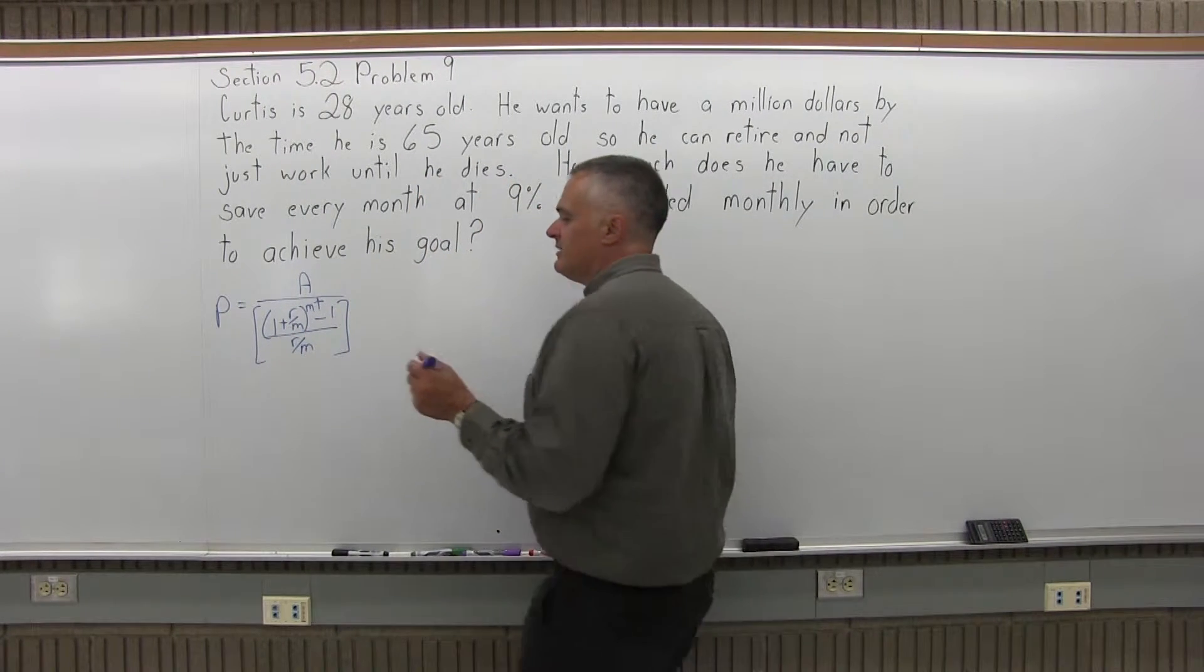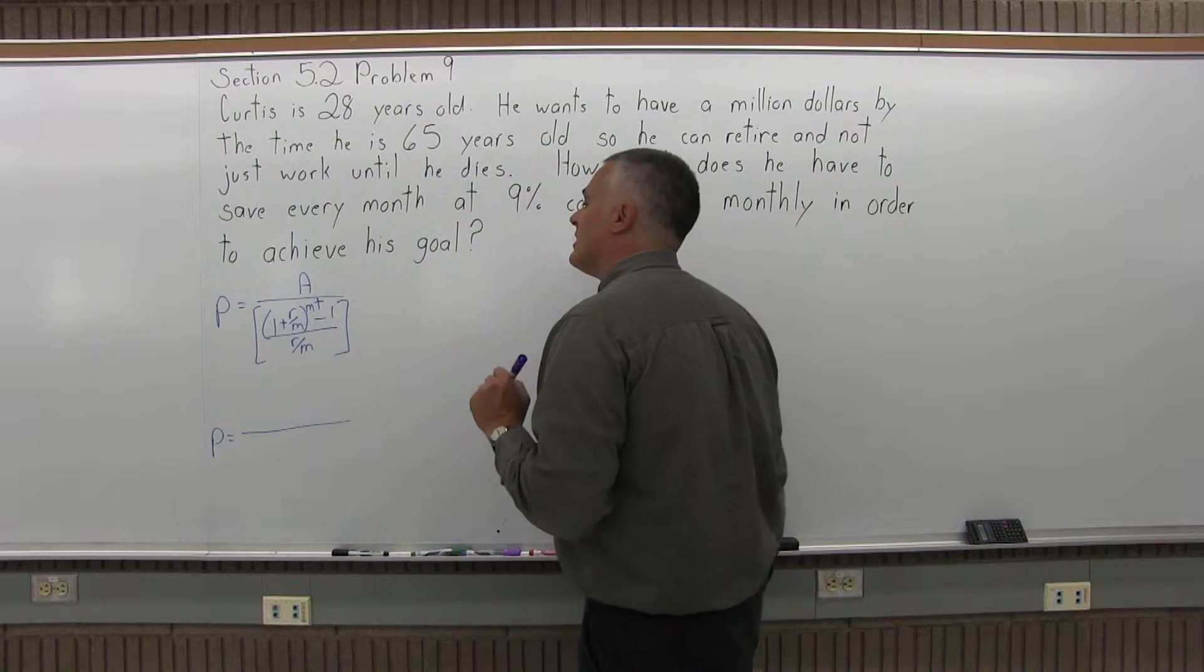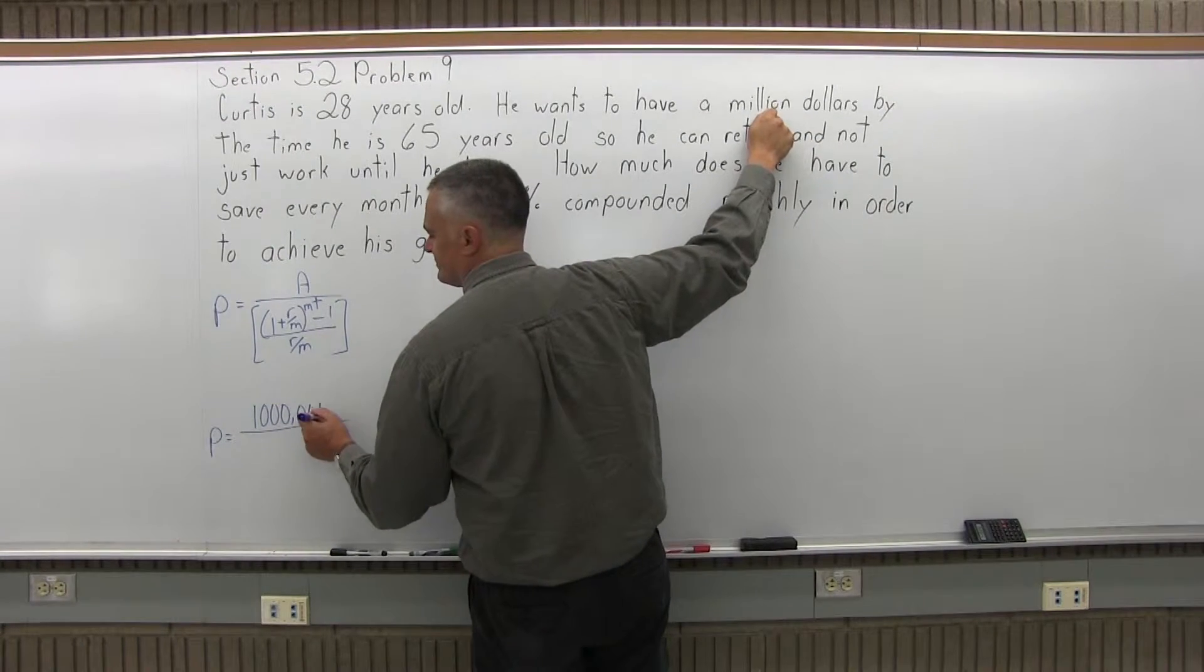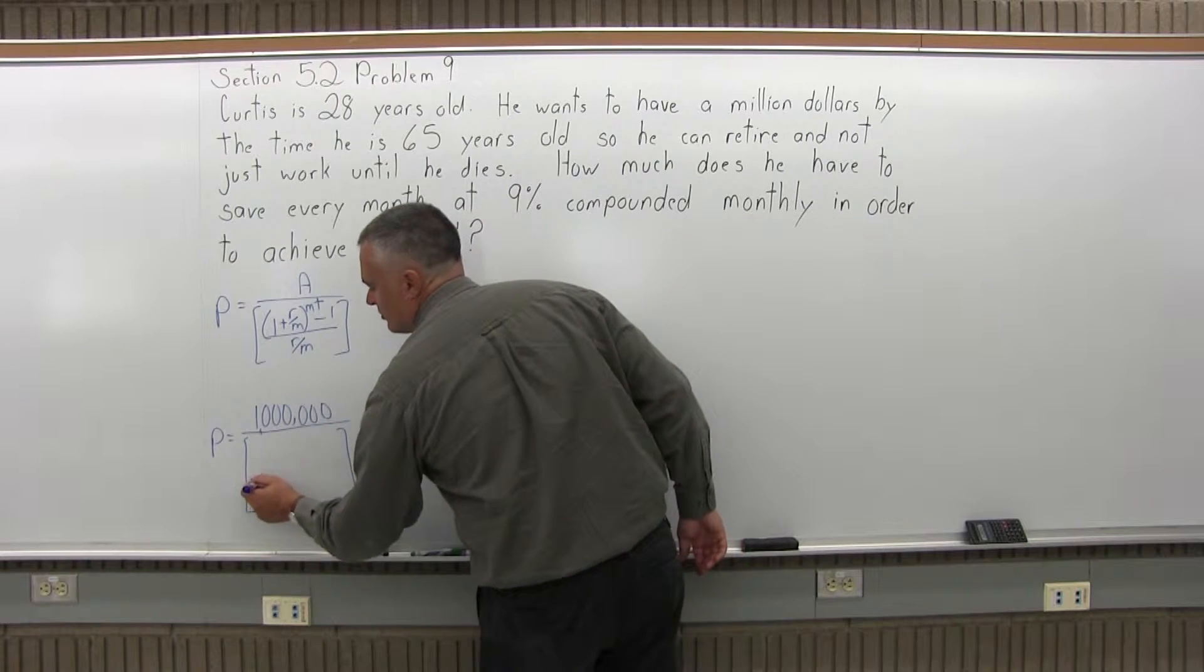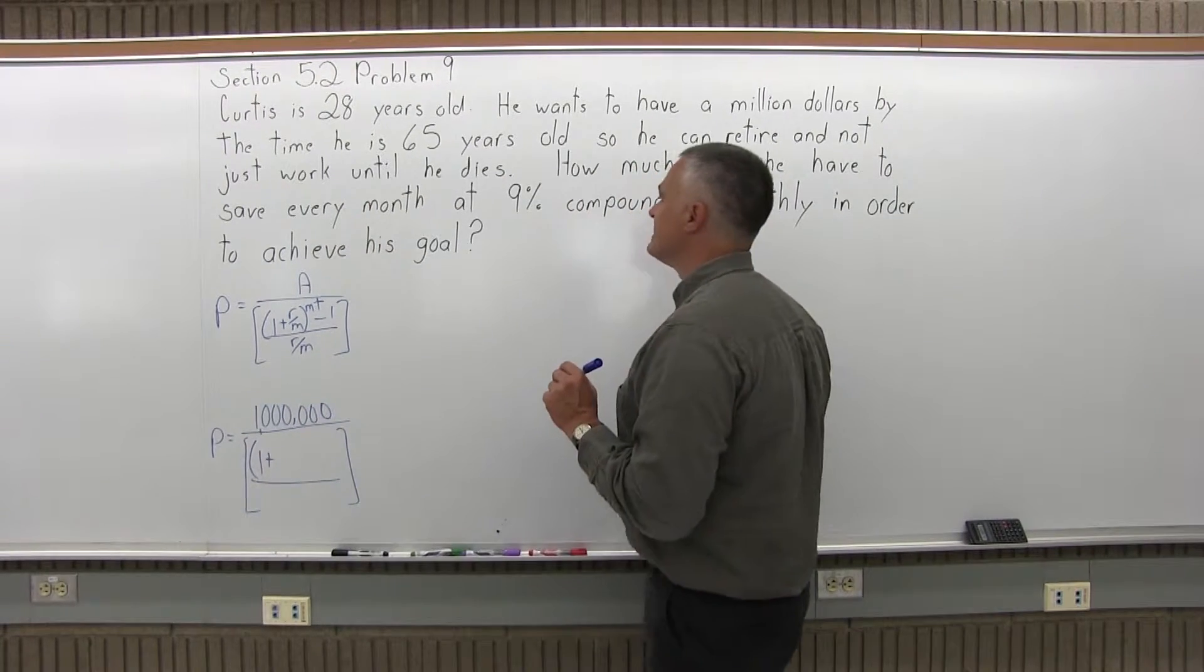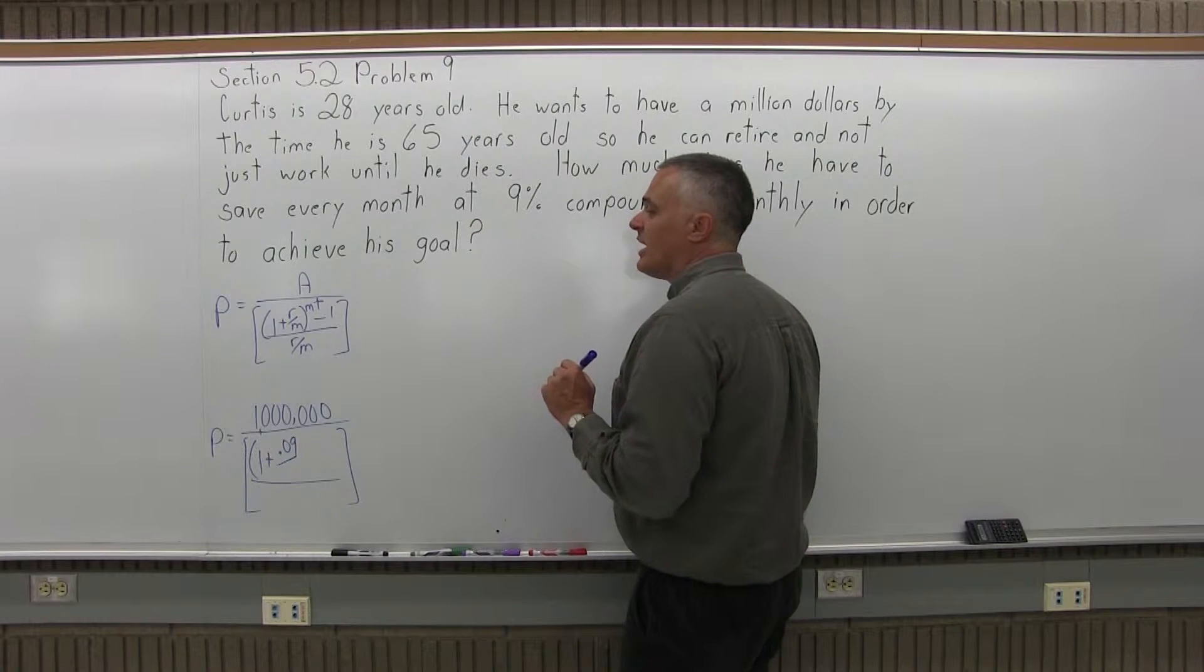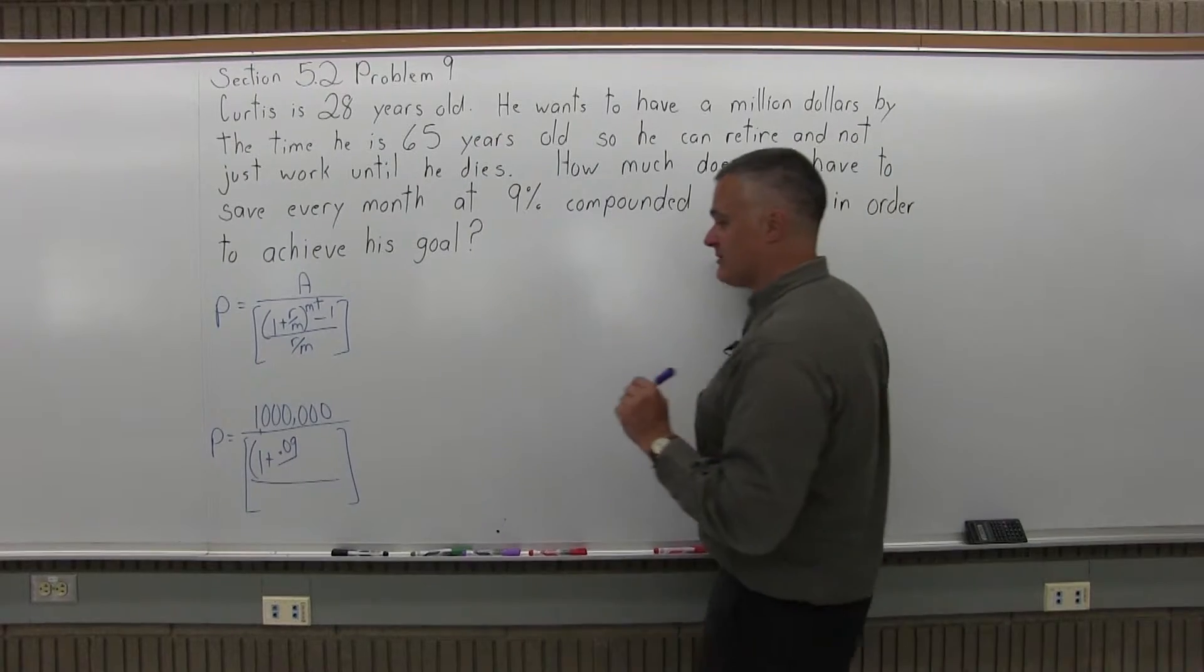So we'll have P equals A on the top of the formula is the 1 million dollars. So that's going to give me a 1 with 6 zeros, that's a million. And then underneath the million we have the brackets and in the numerator of the brackets 1 plus r over m in parentheses. So that's 1 plus r. The rate as a decimal is 9%, 9% as a decimal is .09. And then under the r is an m, which is how many times compounded per year. So this is monthly compounding. My m is going to be 12.